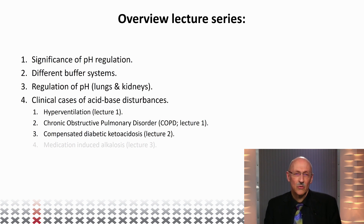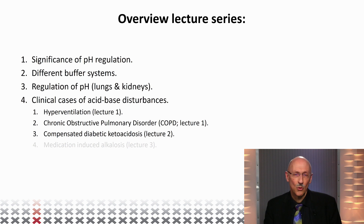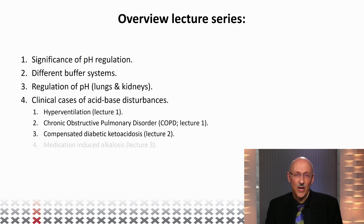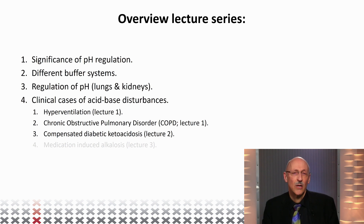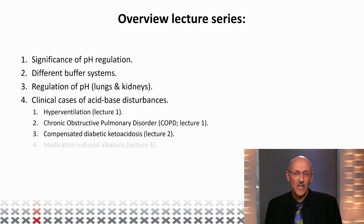We talked about the significance of pH regulation — why it is so important that blood pH is at around 7.4. We talked about the different buffer systems and concentrated on the most important one, CO2 and its conjugate ion carbonate, and discussed how the lungs and kidneys are involved in pH regulation. We talked about hyperventilation and COPD, and now we are going to talk about compensated diabetic ketoacidosis.